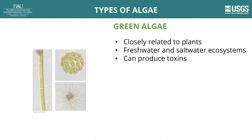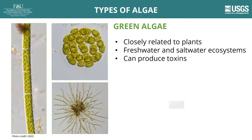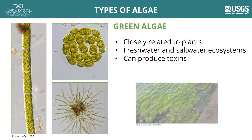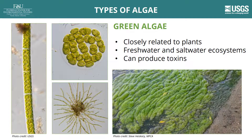Of all the types of algae, green algae are believed to be the most closely related to plants. Green algae can live in both freshwater and saltwater. Some species of green algae are known to produce toxins, and overgrowth of green algae that do not produce toxins can still be problematic.